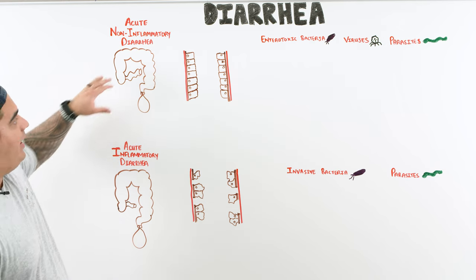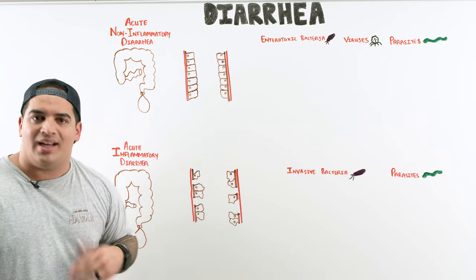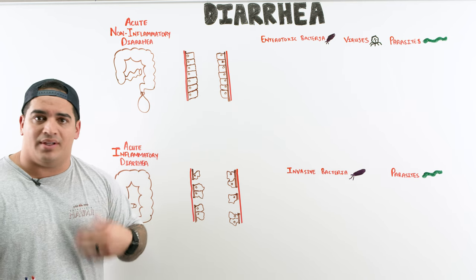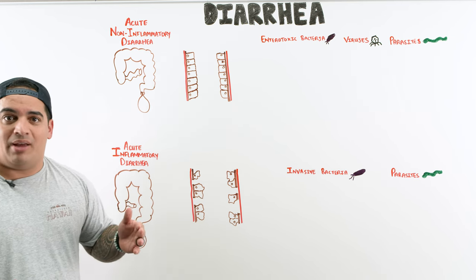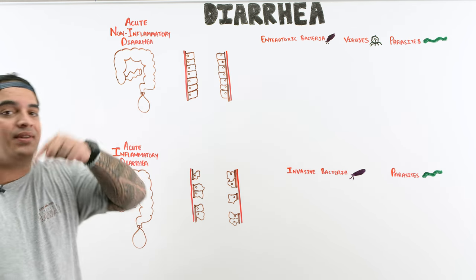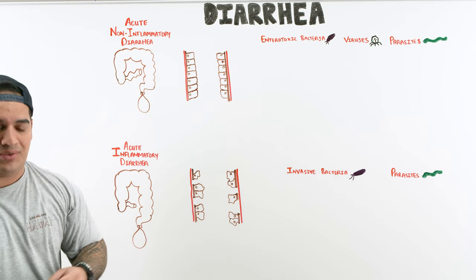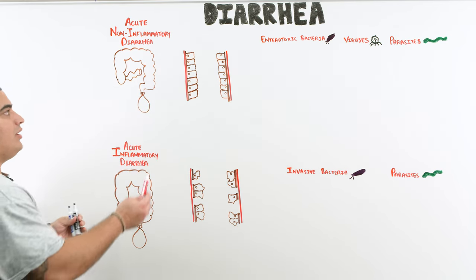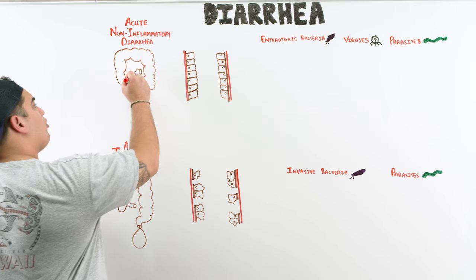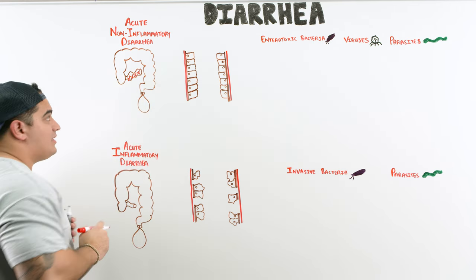In a patient with acute non-inflammatory diarrhea, these cases often get better on their own with supportive care and fluids, and usually won't require treatment. The GI location most commonly affected in this type is the small bowel — the ileum, jejunum, or duodenum.